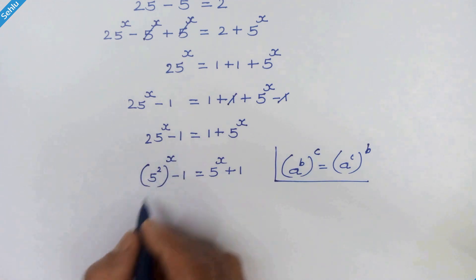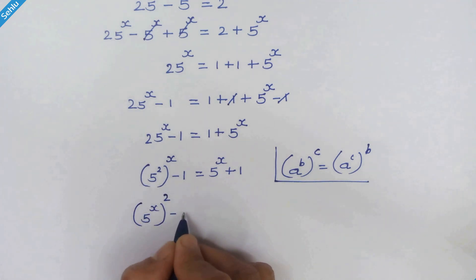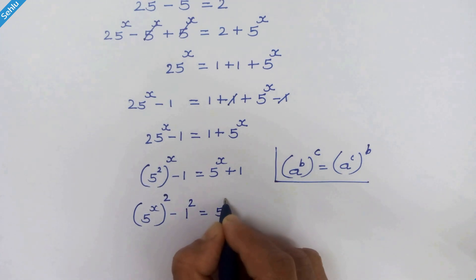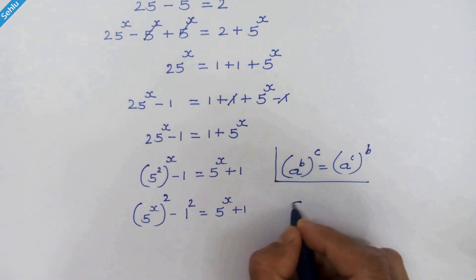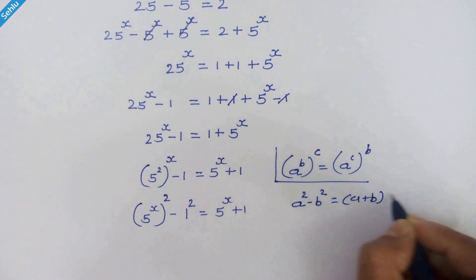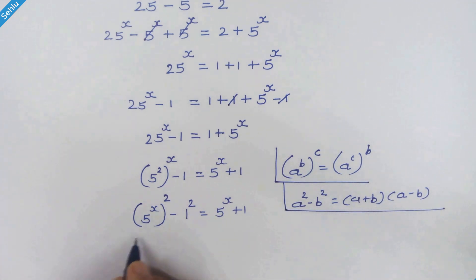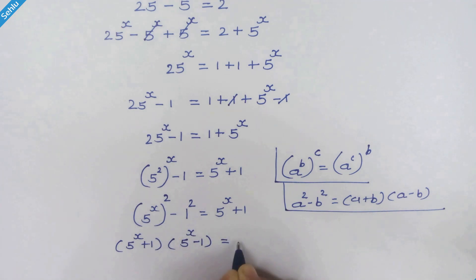According to this rule, this part can be written as 5 raised to x, whole square, minus 1 squared, is equal to 5 raised to x plus 1. Now as we know, this is an identical situation like a squared minus b squared equals a plus b times a minus b. According to this rule, we can write 5 raised to x plus 1 times 5 raised to x minus 1 is equal to 5 raised to x plus 1.